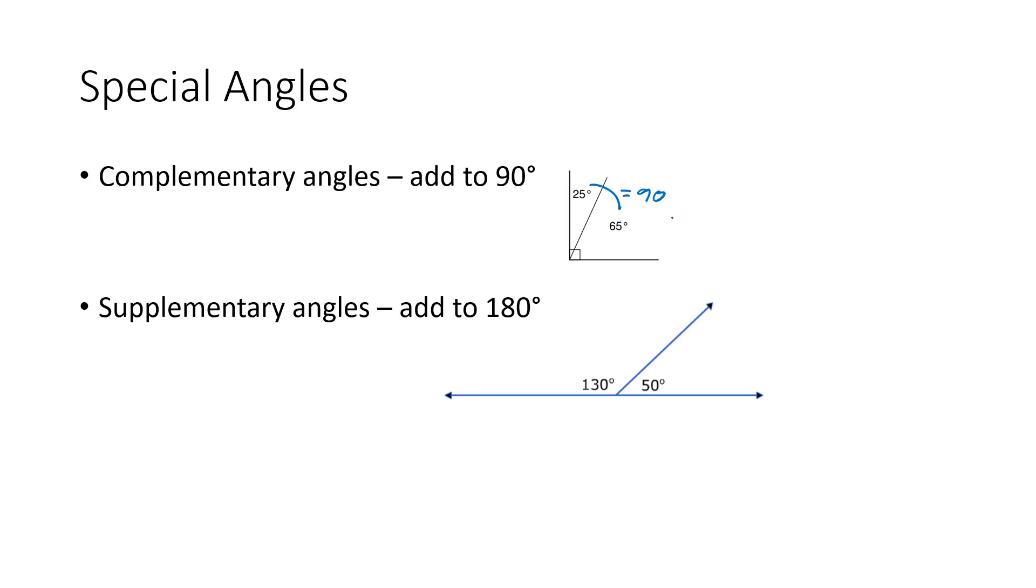The next type of angle we need to know are supplementary angles. Supplementary angles add to 180 degrees. And notice if we combine the 50 and the 130 together, we get 180 degrees, which is that wide open straight line.